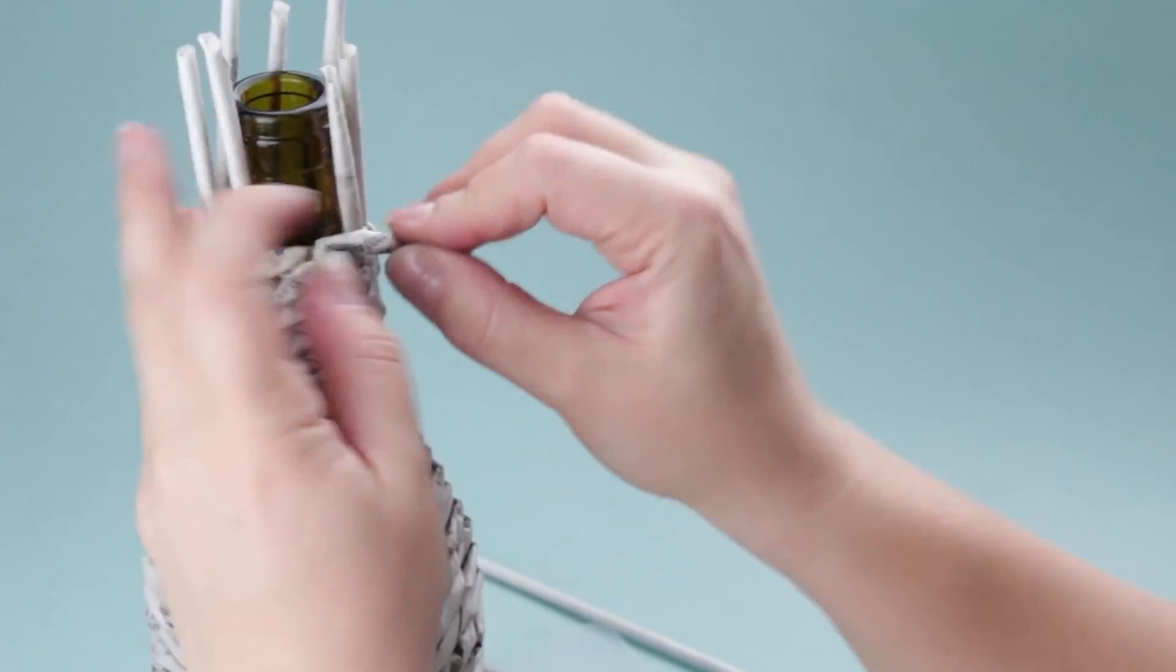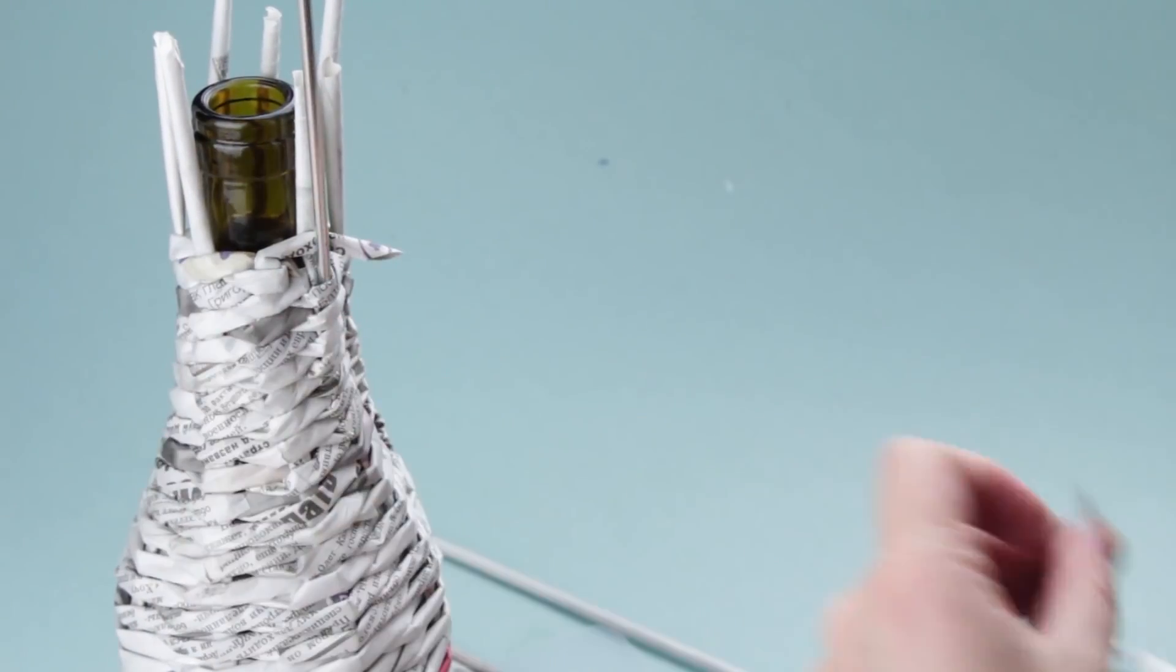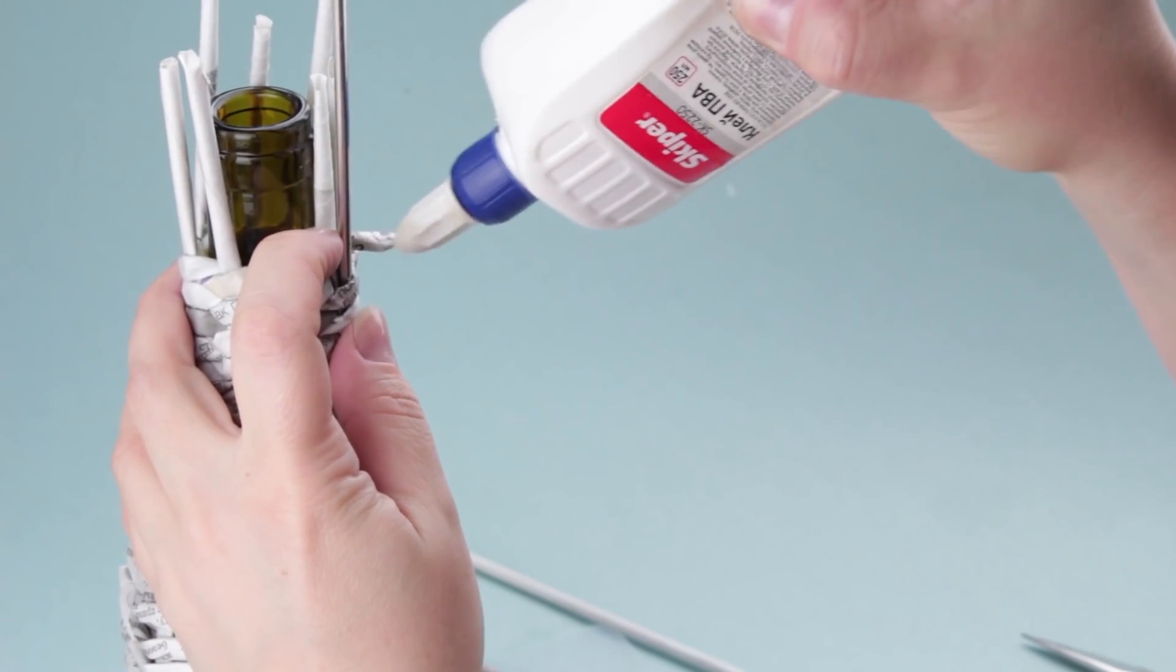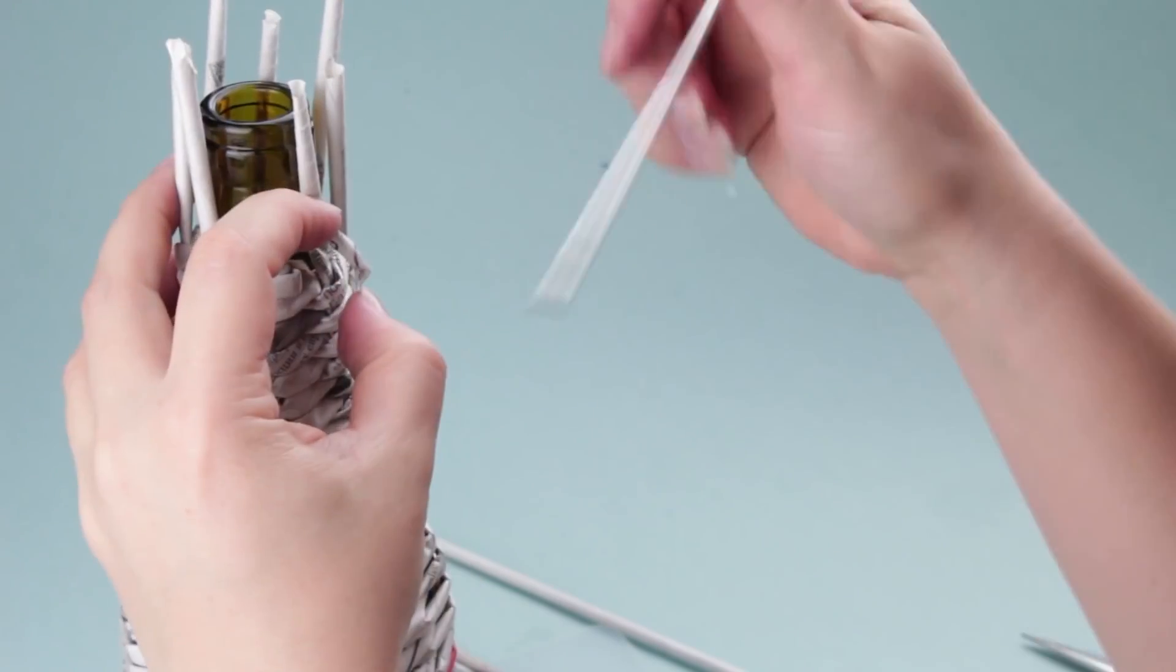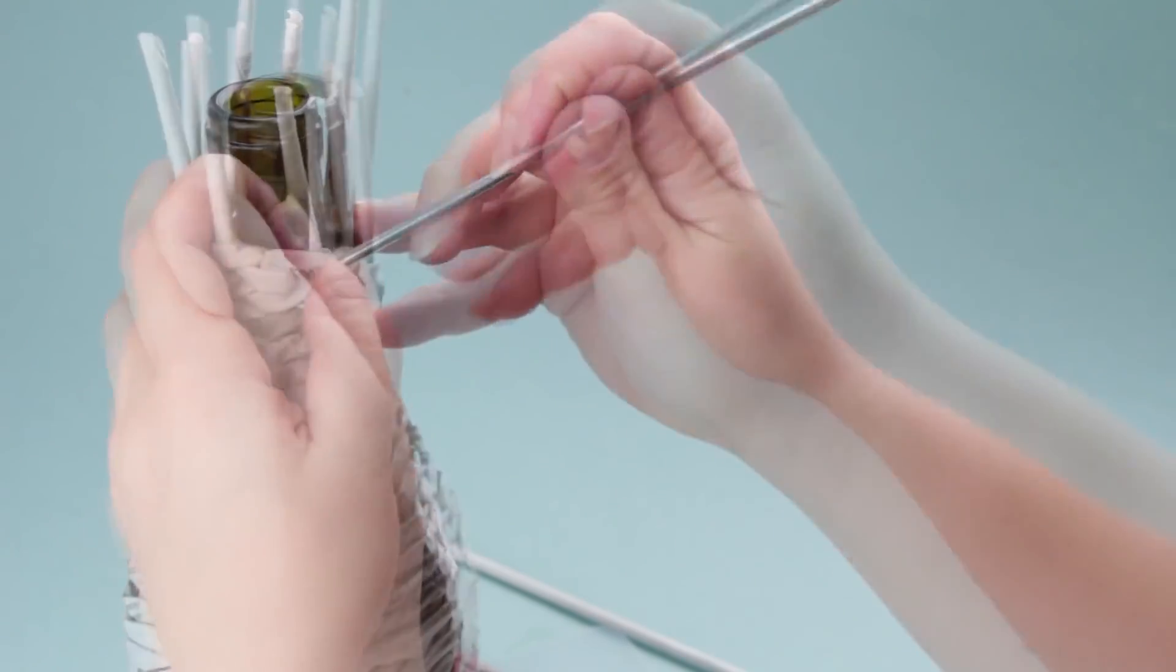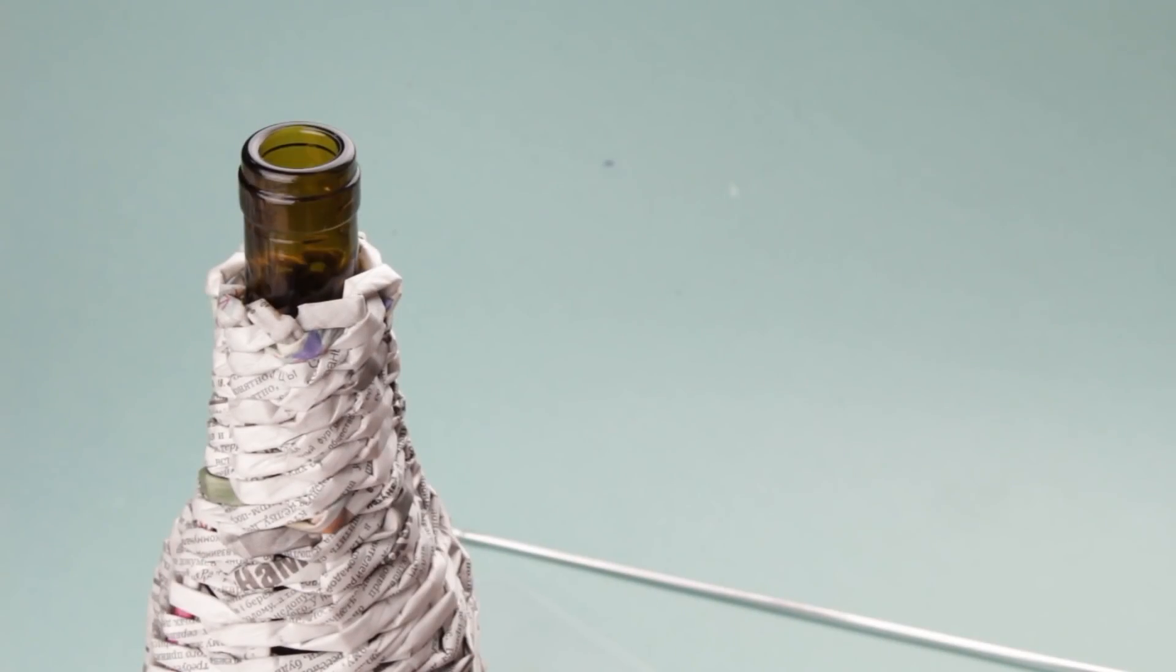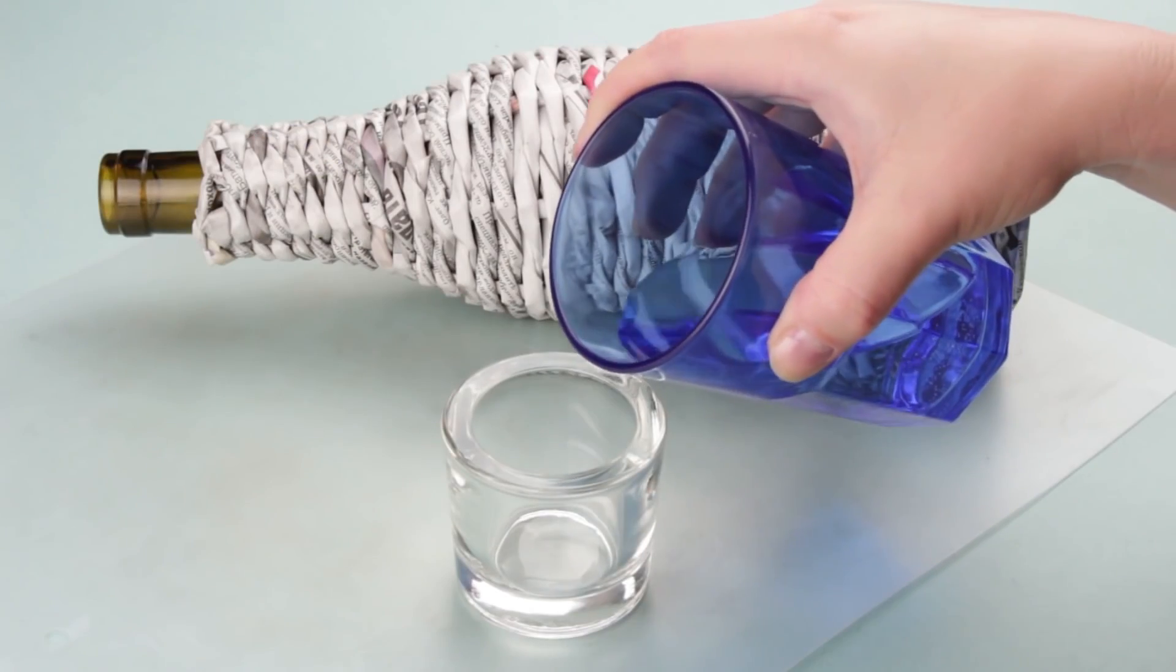Secure the weaving on top. Turn the last stand to the right and downwards. Snip off the end. Add some glue. Tuck into a weaving near the next stand. Finish weaving the edge in the same way. Let's paint the vase.